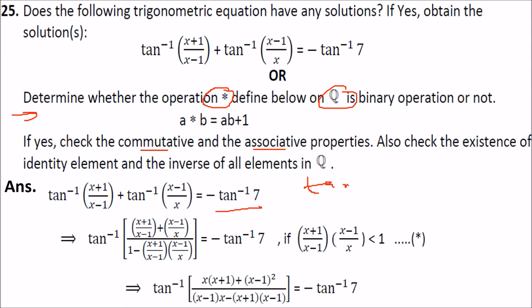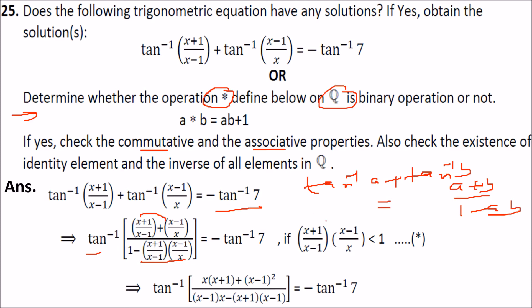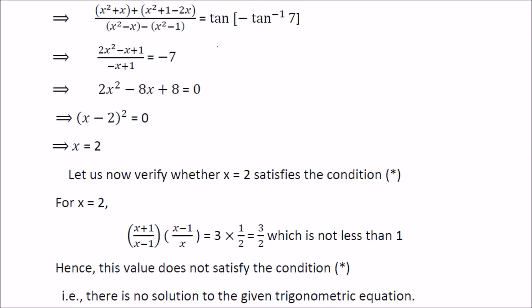For the trigonometric equation, we use the formula tan inverse A plus tan inverse B equals tan inverse of (A plus B) by (1 minus AB). Applying this, the product AB will always be less than 1, so the result equals minus tan inverse 7. Taking tan inverse from both sides, tan and tan inverse cancel, giving minus 7.